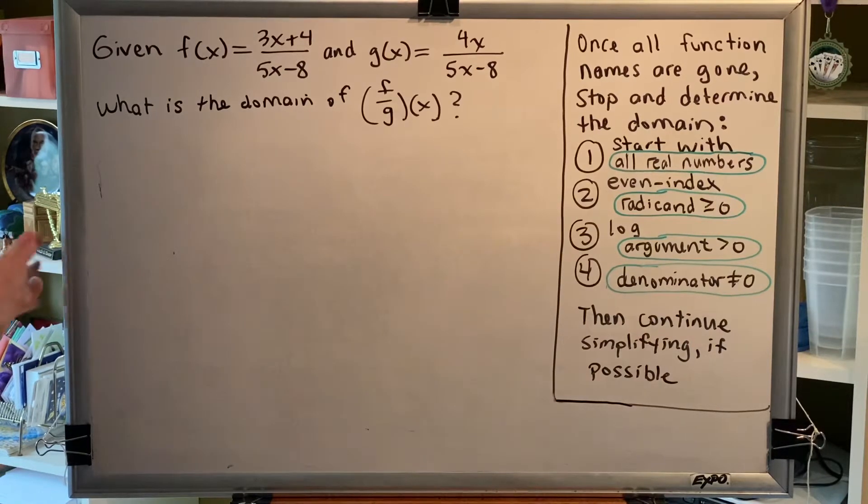Given f of x equals the fraction 3x plus 4 all divided by 5x minus 8 and g of x equals the fraction 4x all divided by 5x minus 8, what is the domain of f over g of x?